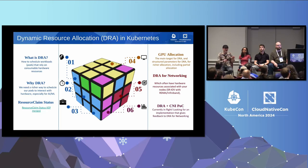The classic example would be SRIOV — Single Root IO Virtualization. If you have an SRIOV-capable network card, you'll have virtual functions. In a standard use case these are represented as network interfaces. Your workload needs to go somewhere that has a VF, a virtual function available, and then that VF is exhausted — so similarly we have that exhaustible resource.